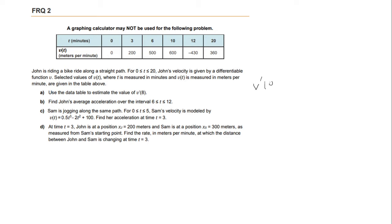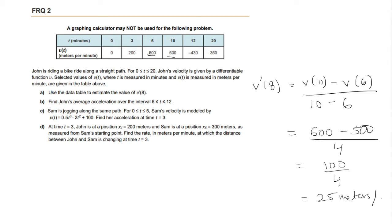So in order to find v prime of 8 we want to use the average rate of change from 6 to 10. So that would be v of 10 minus v of 6 over 10 minus 6. v of 10 is 600, v of 6 is 500, and then 10 minus 6 is 4, so that gives us 100 over 4 which is 25 meters per minute squared. So this is the answer to part A.